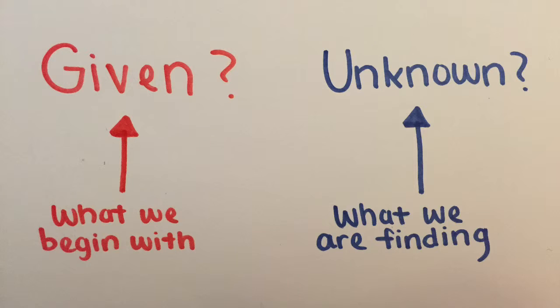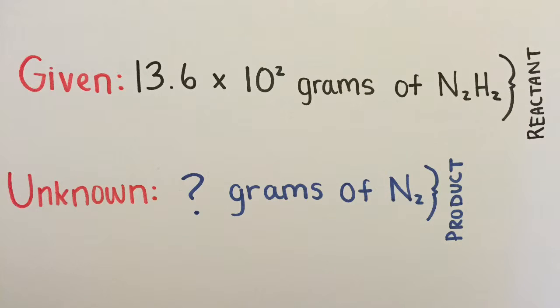Now let's identify the given, what we are starting with, and the unknown, what we are finding. The question says that 13.6 times 10 to the second power grams of hydrazine will be used up and we need to determine how many grams of nitrogen gas will be released. Therefore, the given is 13.6 times 10 to the second power grams of hydrazine and the unknown is question mark grams of nitrogen gas.